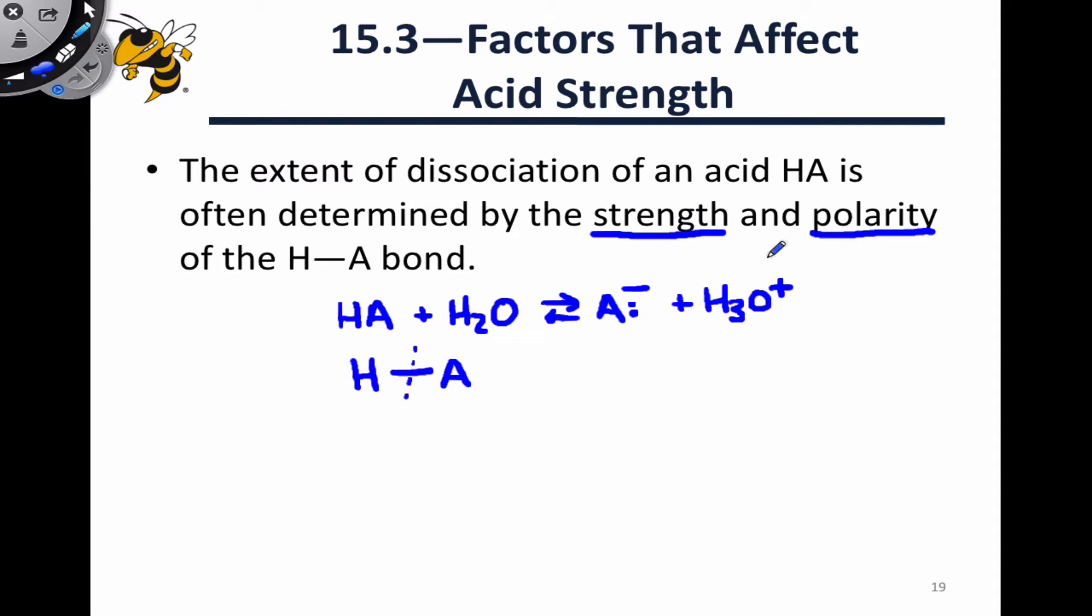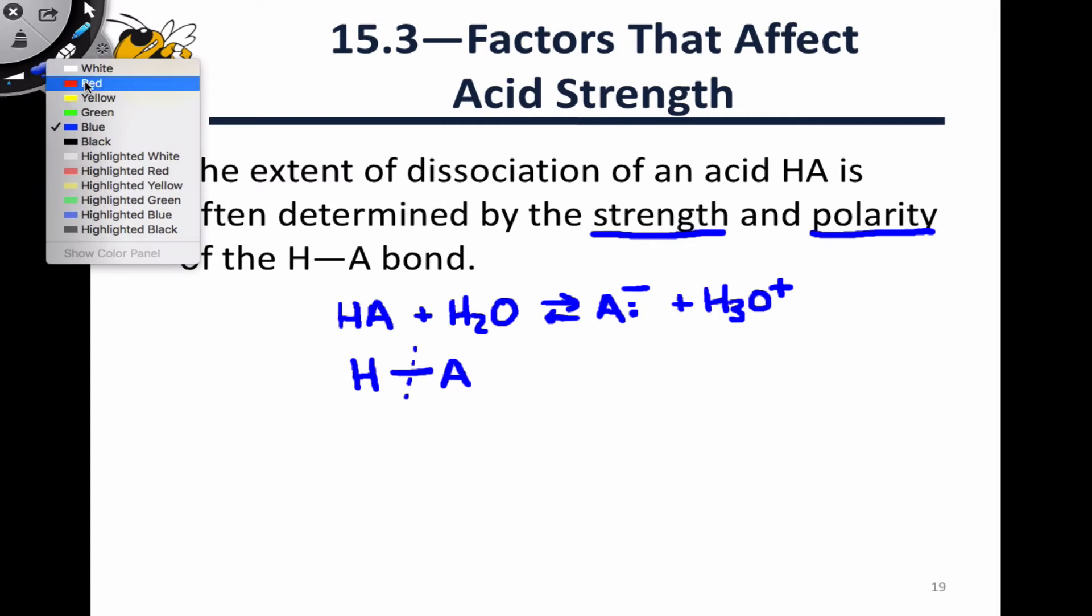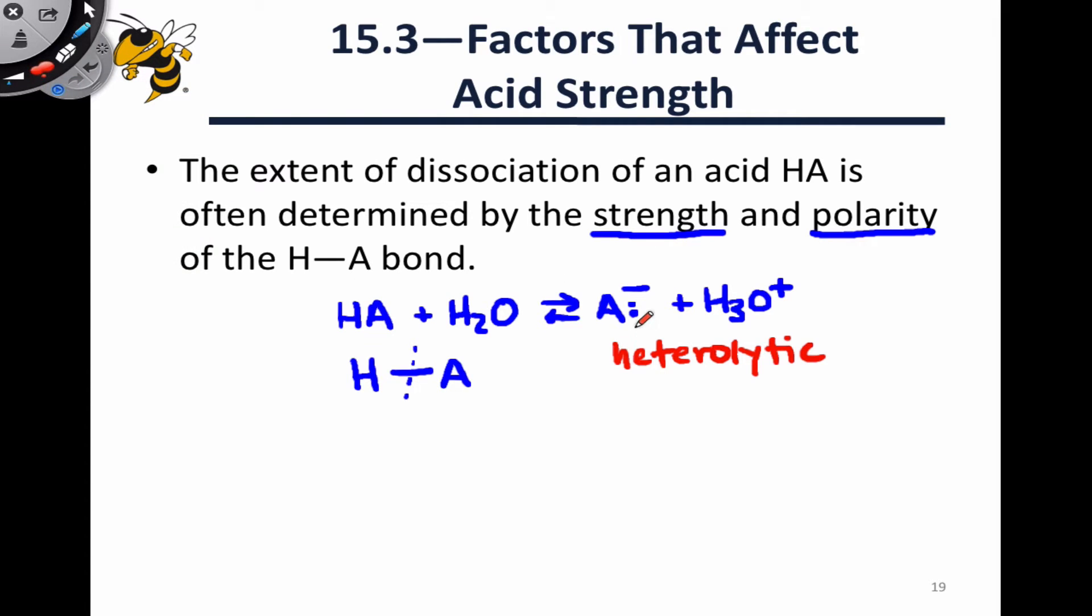It makes sense that the strength of the bond would play into the position of this equilibrium and the strength of the acid. However, the polarity of the HA bond is also really important to consider, because this is what we call heterolytic cleavage, meaning that both electrons of the HA bond end up with one of the two groups involved in the bond, in this case A. How polarized the HA bond is in terms of the amount of positive charge on the H atom and the amount of negative charge on the A group is going to dictate how easily this can fall apart into A minus and H3O plus.